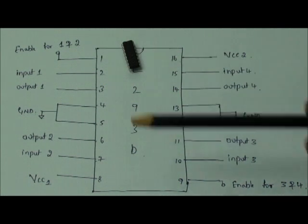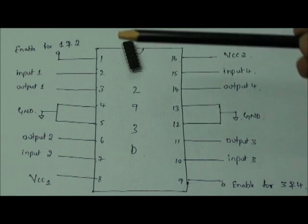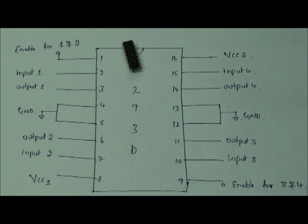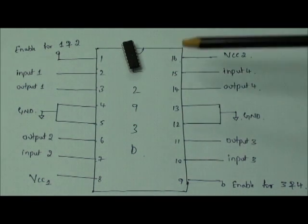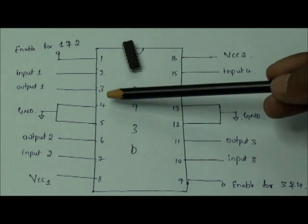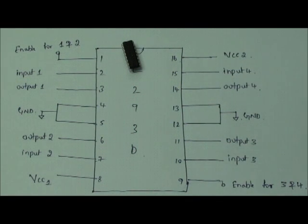There are totally 4 input pins and 4 output pins. Pin numbers 2, 7, 10, and 15 are the input pins. Pin numbers 3, 6, 11, and 14 are the output pins. Pin numbers 4, 5, 12, and 13 are to be grounded. Pin numbers 1 and 9 are the enable pins. Pin numbers 8 and 16 are the VCC pins.